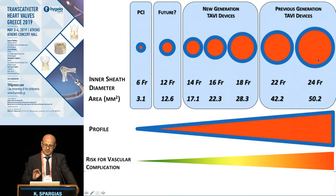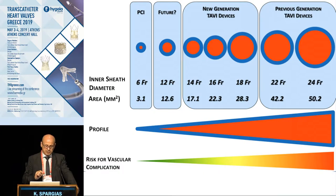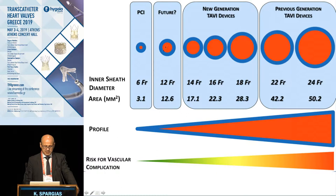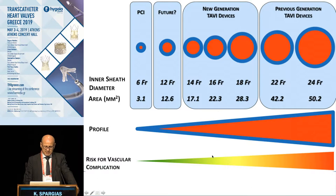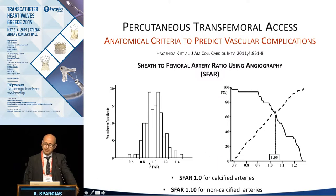We started from 24 French profiles to deliver our devices and are now down to 14 French. When we import these numbers, they are the inner diameters of the sheaths. To get the outer diameter, we add 3 to 4 French. To convert French to millimeters, remember that one millimeter equals 3 French. We hope and expect to achieve 12 French-compatible devices in the future, and as the profile of our devices goes down, the risk of complications also goes down.